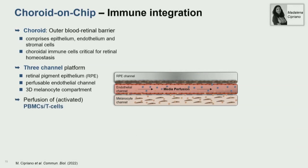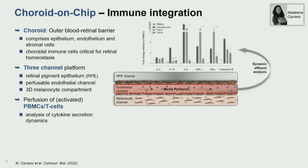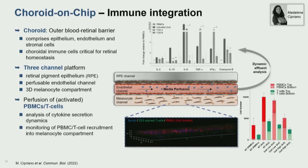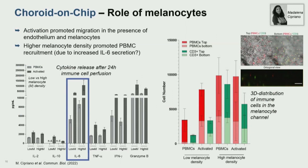We could perfuse T cells or PBMCs in an activated or non-activated fashion and look at cytokine dynamics in the effluent and at the recruitment of PBMCs into the melanocyte compartment. Interestingly, the density of the melanocytes has a strong impact on cytokine release and on T cell recruitment. We could see that higher melanocyte density promoted PBMC recruitment, most likely through increased IL-6 secretion, and that this was mostly driven by T cell recruitment specifically.